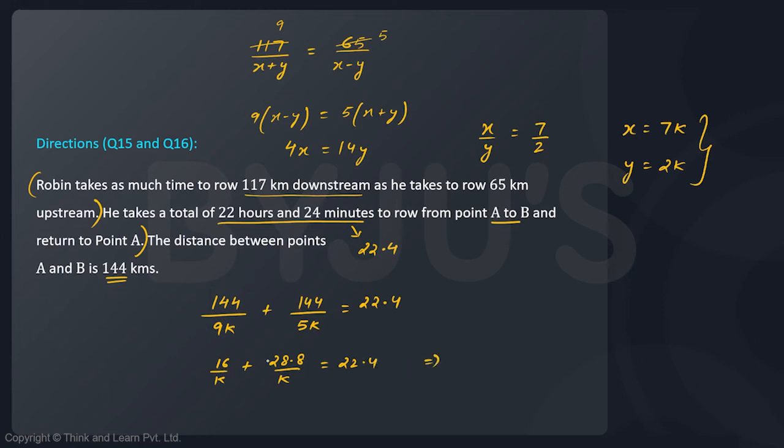Simplifying: 16 plus 28.8 is 44.8 upon K equals 22.4, so the value of K will come out to be 2. So now I have got the values of X and Y. Value of X is 7 into 2 that is 14 kilometers per hour and the value of Y is 2 into 2 that is 4 kilometers per hour.